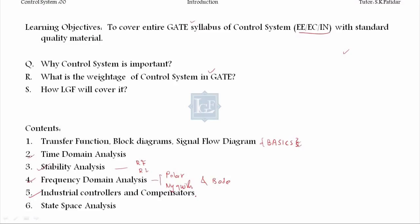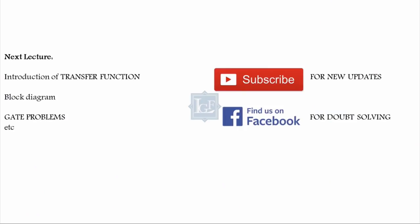Now in the fifth unit we will deal with the industrial controllers and compensators. This particular unit is very important for the IS people also. And in the last unit we will deal with the state space analysis.